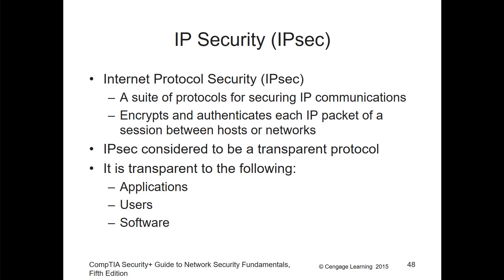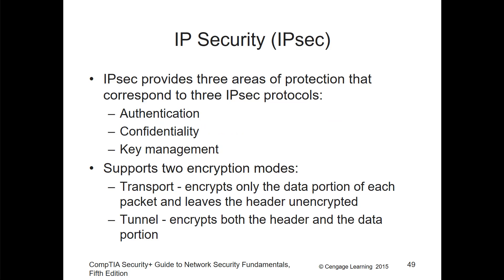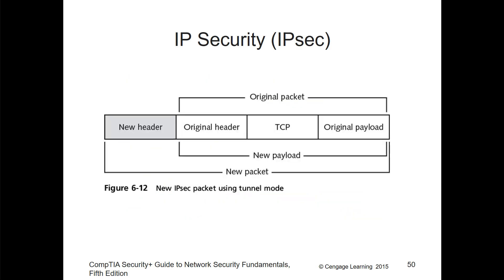One of the last major protocols for VPN technology is IPSec — IP Security — a suite of protocols used to encrypt and authenticate each IP packet, increasing the security of the internet protocol. IPSec is considered a transparent protocol — transparent to applications, users, and software, so they don't realize it's happening. IPSec provides key management, confidentiality, and authentication. It supports two encryption modes: Transport (encrypts only the data) and Tunnel (encrypts both the header and the data).